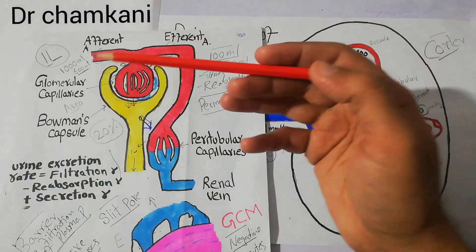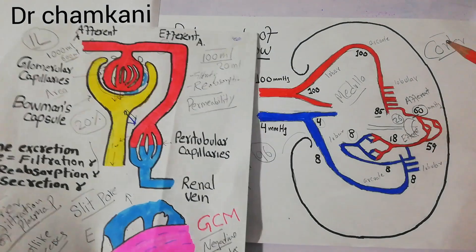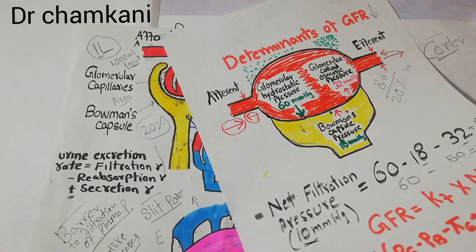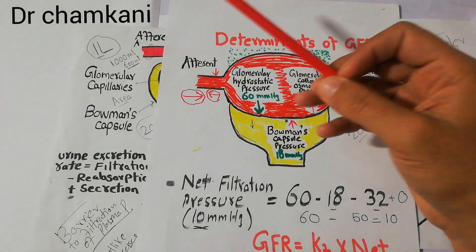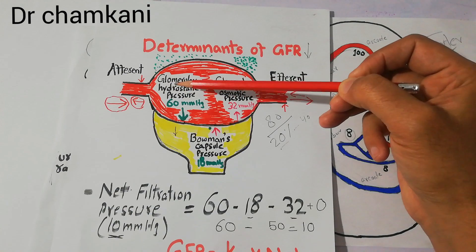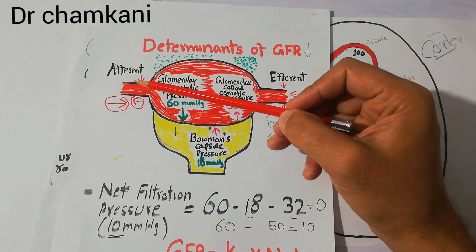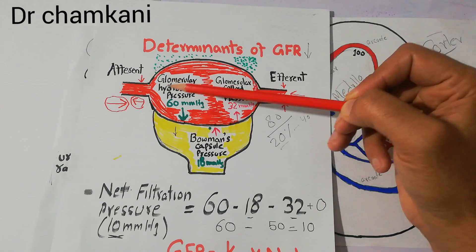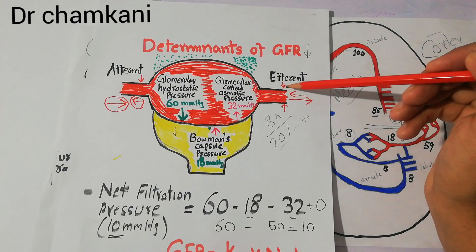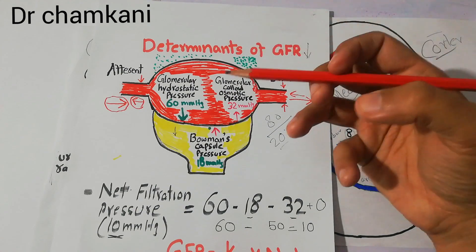When constriction occurs and resistance at the afferent or efferent arterioles increases, the glomerular hydrostatic pressure decreases, causing the filtration process and urine formation to decrease. Inside the glomerular capillary there are forces including glomerular hydrostatic pressure and glomerular colloid osmotic pressure. A slight increase in efferent arteriolar resistance may increase the GFR, but severe increase in efferent arteriolar constriction or resistance can decrease the GFR.